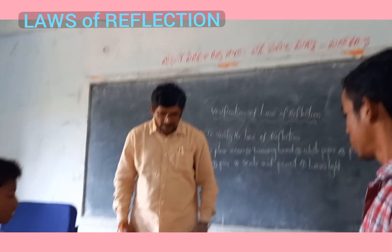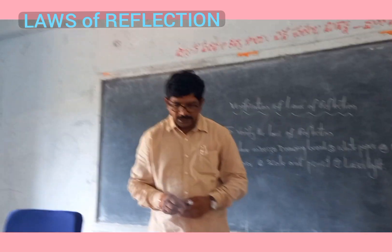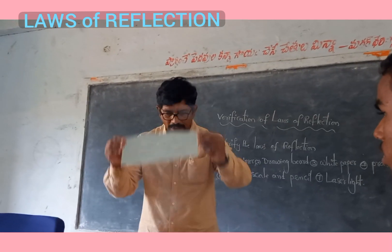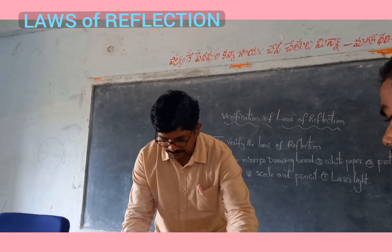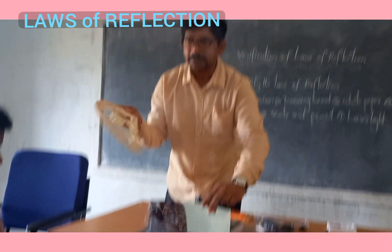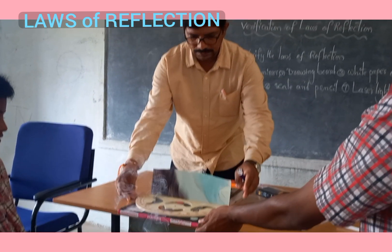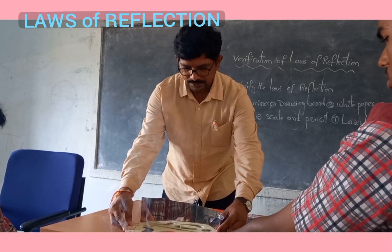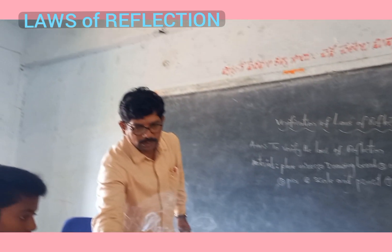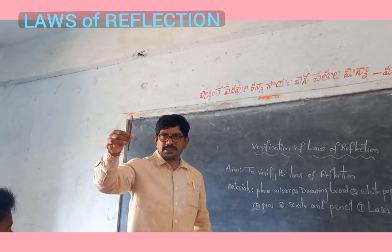First, laser light — this is the laser light. Next, a plane mirror. Next, a protractor. And two incense sticks.